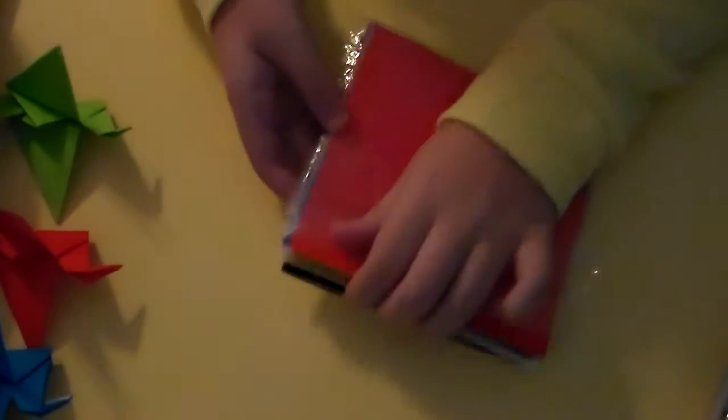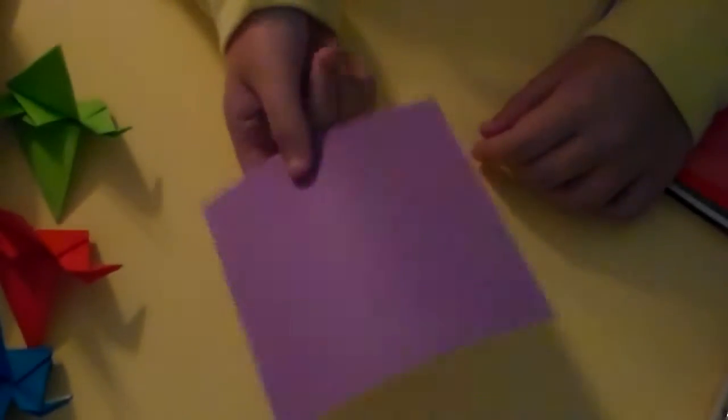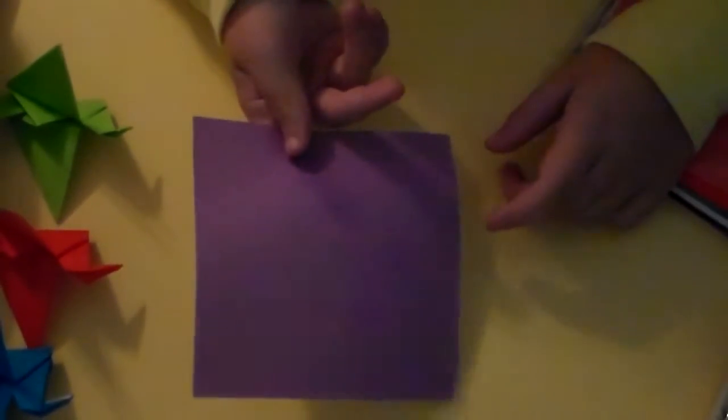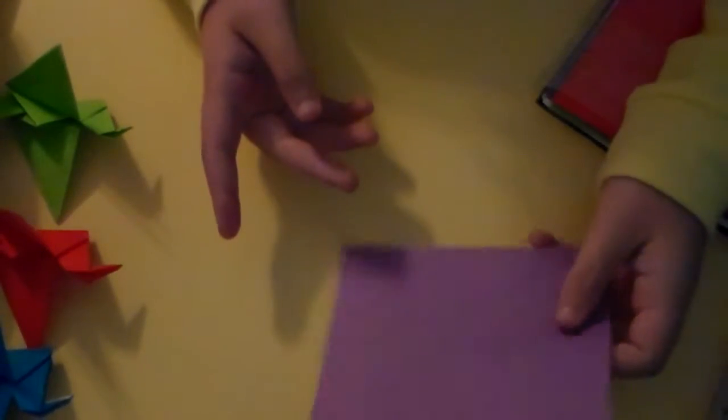So you want to take a square piece of paper. It doesn't matter how big it is, but it has to be a complete square. I'm going to take a purple one. A lot of you will probably have colored paper that is maybe two-sided, but mine is only one-sided with color. So I'm going to show you how to do the color.